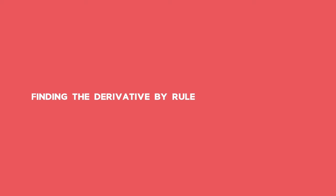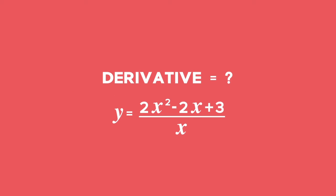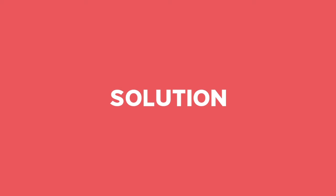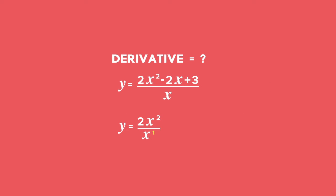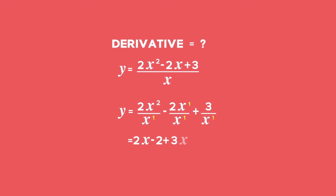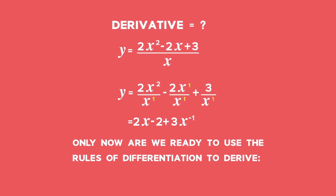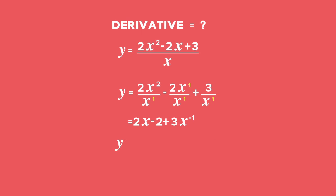Example 4: Finding the derivative involving fractions. Find the derivative of y equals 2x squared minus 2x plus 3, all over x. Solution: Rewrite as separate terms — 2x squared over x minus 2x over x plus 3 over x — then rewrite with all variables in the numerator: 2x minus 2 plus 3 times x to the power of negative 1. Now apply differentiation rules: y prime equals 2 minus 3 times x to the power of negative 2, which equals 2 minus 3 over x squared.